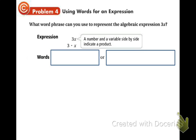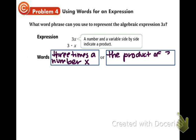In example 4, we are given the expression and we need to write it as words. So this is exactly the opposite of what we just did. We have the expression 3X. It can also be written as 3 dot X or 3 times X. So we're going to write that, 3 times a number X. Another way to say this is the product of 3 and a number X. Remember because product means multiplication. So that is example 4 and we are ready to go on to the last example.